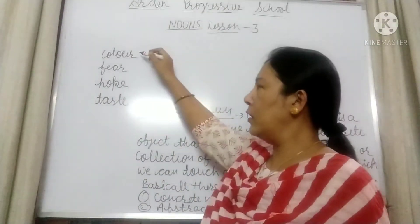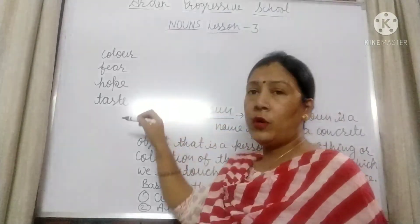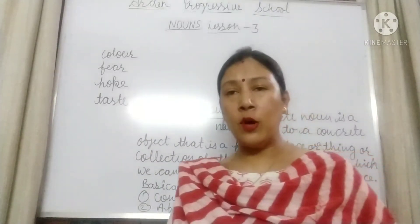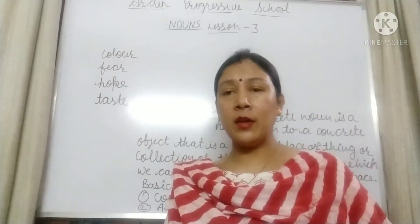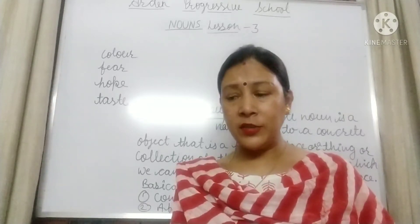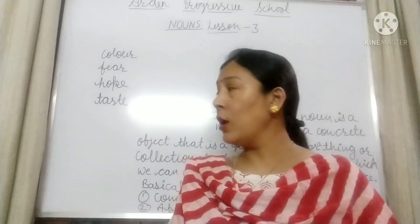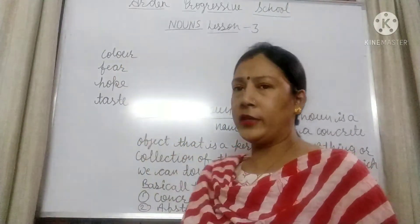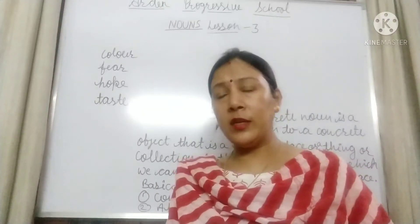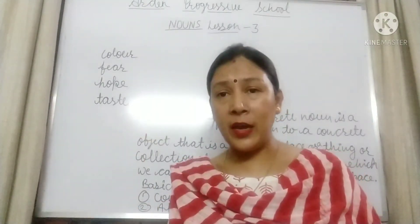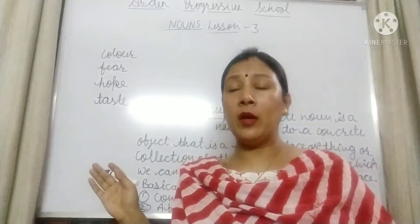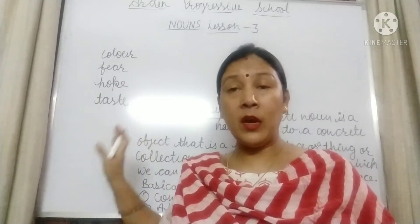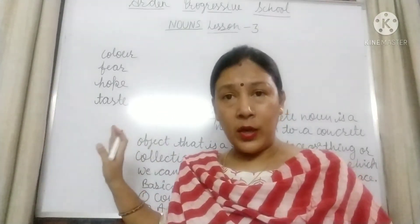Students, look at the board. Some words are given here: color, fear, hope and taste. These are verbs. When they are used as abstract nouns, they will remain the same — color, fear, hope and taste. They are not going to change.